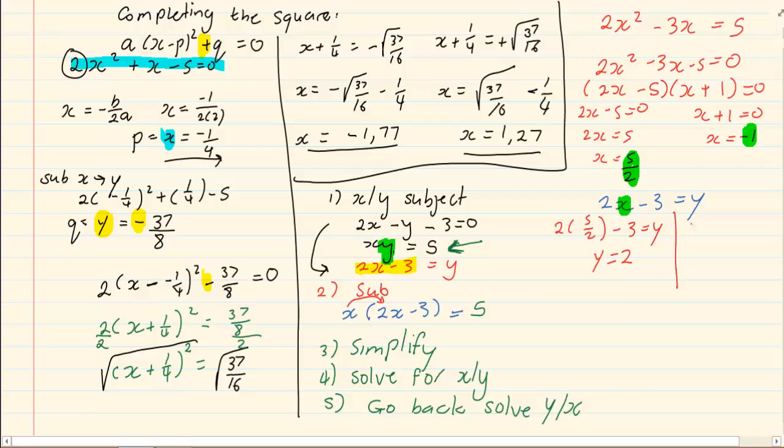And, we have to do the second one. We have 2 into minus 1 minus 3 is equal to y. So, we have y is equal to minus 5.